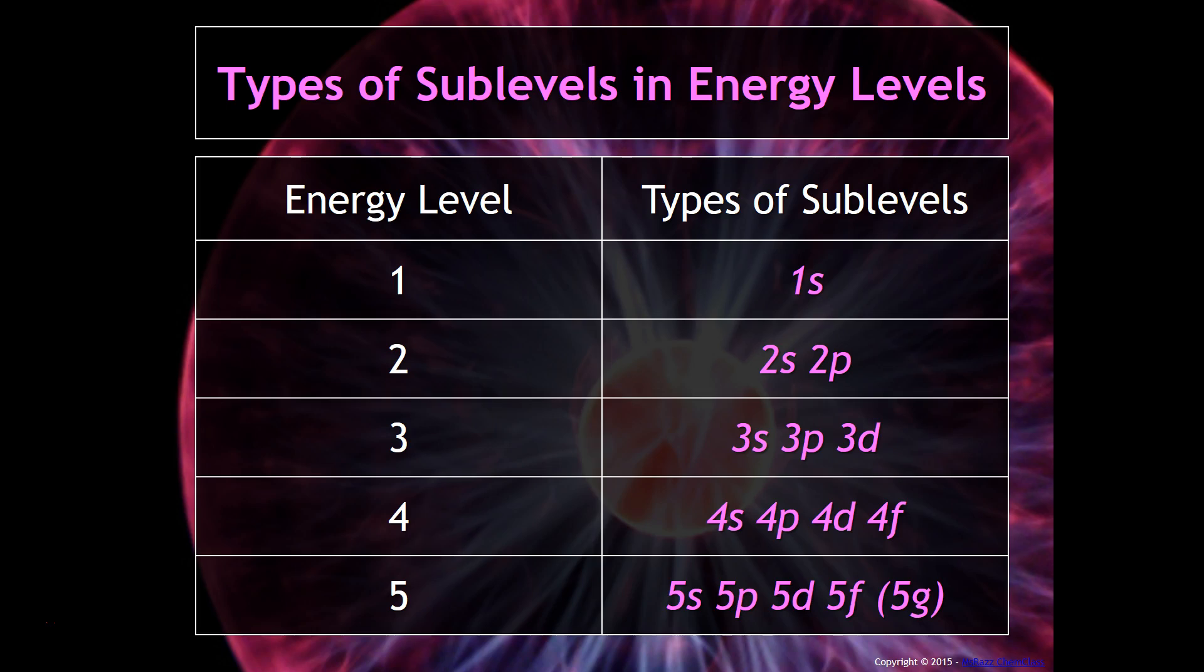Within each energy level, there are sublevels. The way that we write it is we put the number in front, which indicates energy level, and the sublevel letter next to it. For example, in energy level one, there is only one type of sublevel: the 1s sublevel. Energy level two has a 2s and a 2p. Energy level three has three types of sublevels: a 3s, a 3p, and a 3d. Can you see a pattern here?